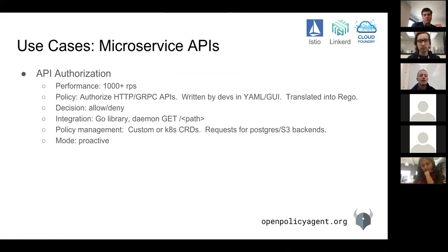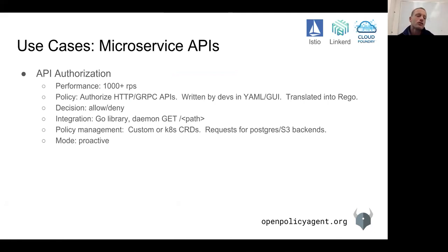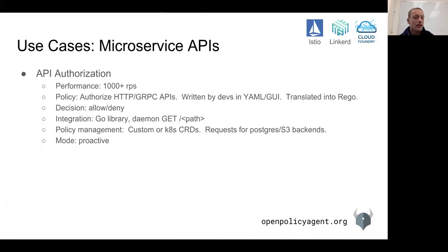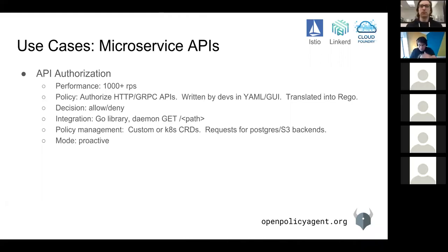For use cases where performance is critical, it also turns out the amount of data typically used is smaller, and the policies written are typically much simpler. These decisions are basically allow-and-deny — classic authorization decisions. We've seen people do these integrations with a Go library running it as a daemon, or the other integrations with service meshes.